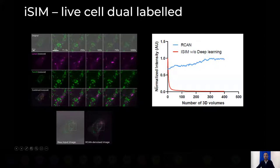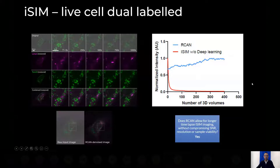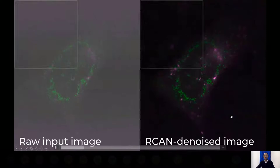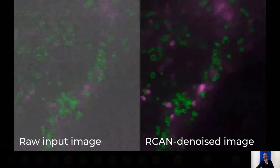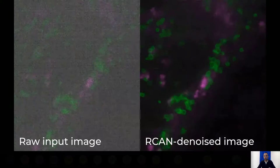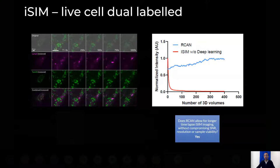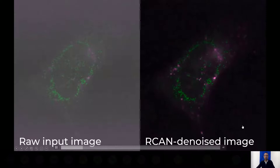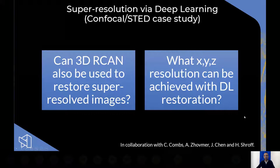We then tested models trained on fixed samples on live samples, and found that the samples stayed alive for a very long time. This shows a long-term experiment with lysosomes and mitochondria — you can even observe organelle interactions. In the BioArchive paper, we comment on the kinds of interactions observed. This technology enables long-term imaging, which opens up novel experimentation and novel biology.